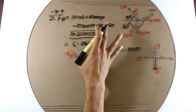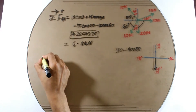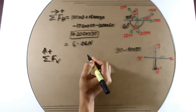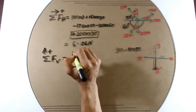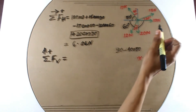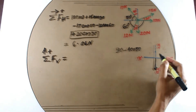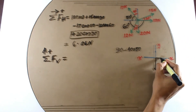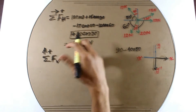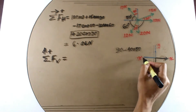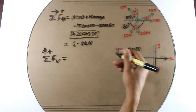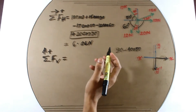Then we are talking about the vertical force — the sum of vertical force equals. This time, the power will be both positive and negative. This is 10N. This is how to merge — if we are working with a vertical force, we can see the upper force components.